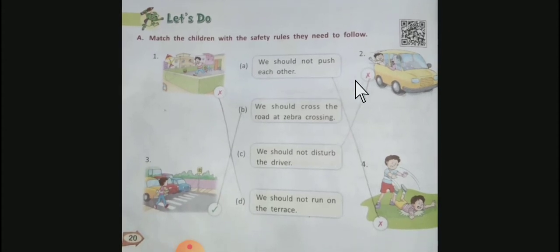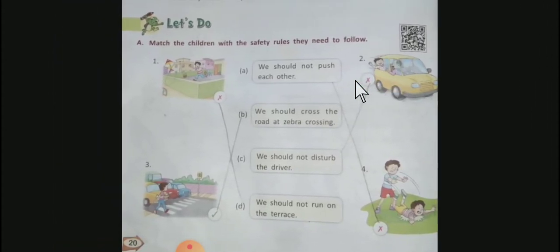Let's Do. Match the children with the safety rule they need to follow. Picture number one: The boy is running on the terrace for a kite.